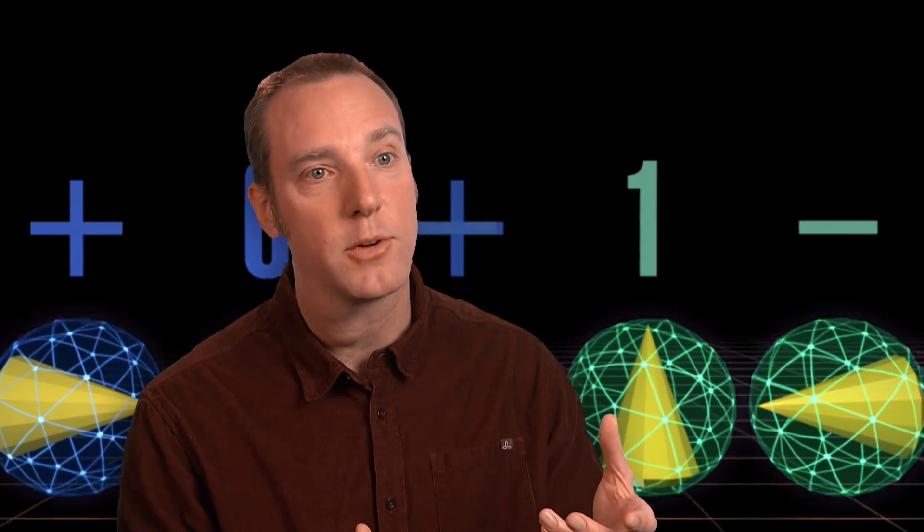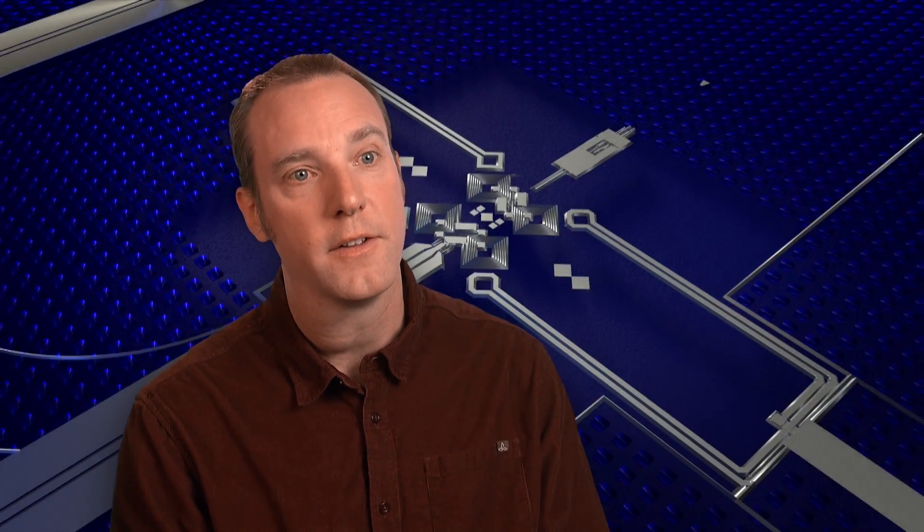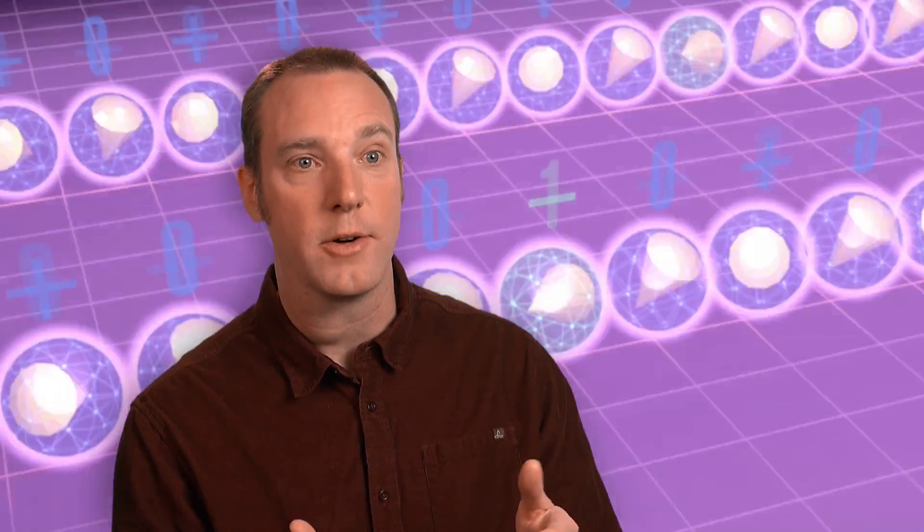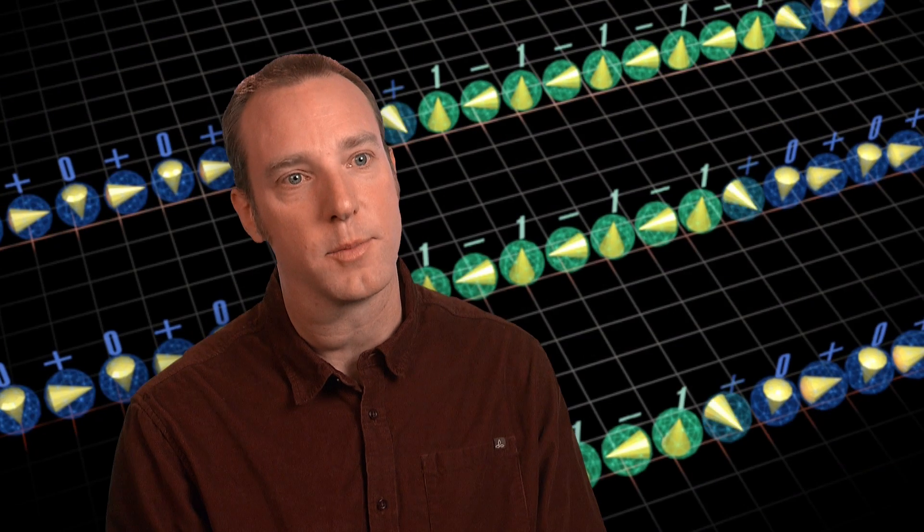So what we need to be able to do is set up that quantum system in either one of those states and read it out, be able to measure it and say, oh, it's a zero or it's a one. So it's analogous to a regular bit, but it's quantum. The quantum part comes in because that bit can also be zero and one at the same time, and you can't do that with a classical bit.